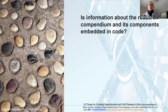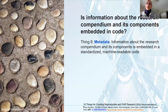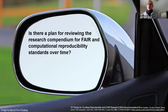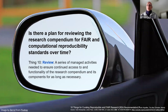Further: is information about how the compendium and its components can be used available and easy to understand? This covers access — is it clear who can use what, how, and under what conditions, with open access preferred — and provenance, where the origin of components and how each has changed over time must be evident. Metadata should be embedded in standardized, machine-readable code, and automation means the computational workflow is script- or workflow-based so it can be re-executed using minimal actions. Finally, there should be a plan for reviewing the compendium to ensure it meets FAIR and computational reproducibility standards over time.